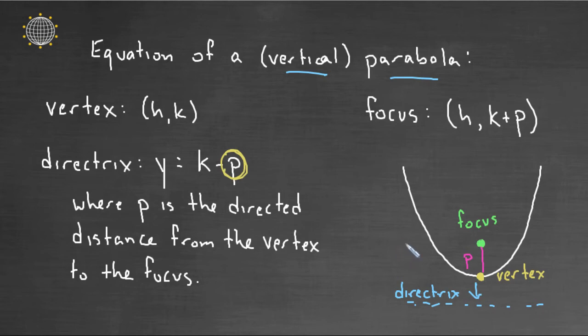Okay so if you know all these things, if you know the H, you know the K, you know the P, you know the focus and the directrix and the vertex and all these things. Now how do we write its equation? Again, I haven't shown you yet what's the equation of the parabola.